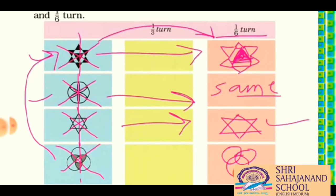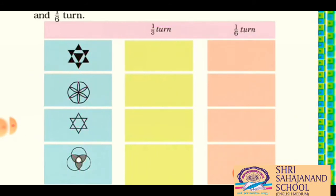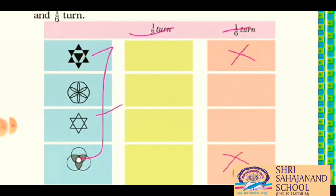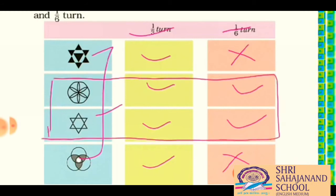So you found that in one-third turn all shapes were the same, but in one-sixth turn the first was just opposite and the last was just opposite, while the second and third pictures were the same. Here you can observe that the second and third were looking the same in one-third turn, and also looking the same in one-sixth turn. So a figure which looks the same on one-sixth turn will also look the same on one-third turn, which is the same as two one-sixth turns.